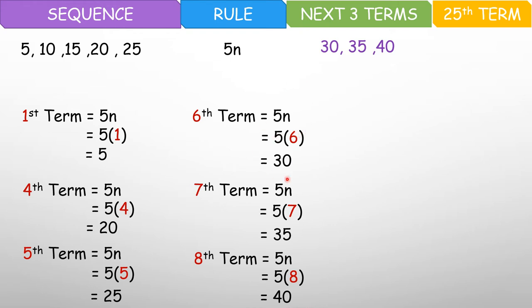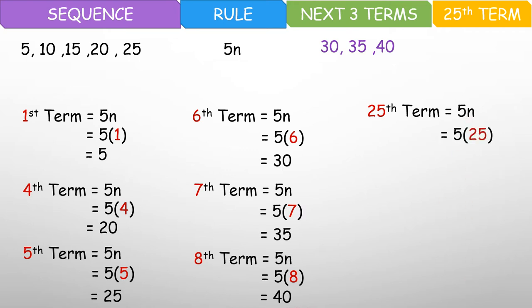Now bakit ba iso-solve pa? Kasi kung ang hiningi ay 25th term, may matatagalan ka, diba? Kaya kung alam mo na yung rule, apply mo lang yung rule, and then mabilis na lang sumagot for the 25th term, or any term. Kaya nga nth term ang tawag. Kahit ano, basta meron kang rule. So 25th term — that would be 5 times n. Palitan natin yung n ng 25. So 5 times 25, that is just 125. So the 25th term is 125.